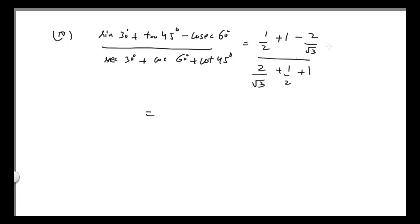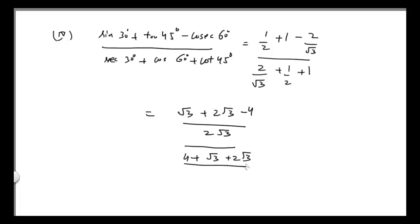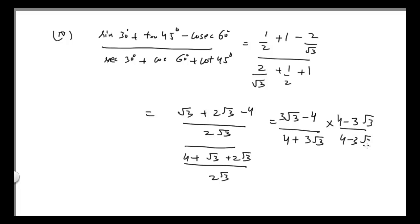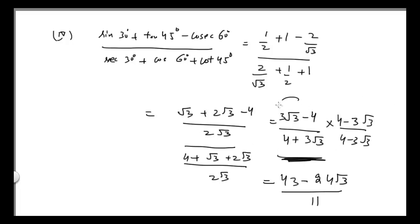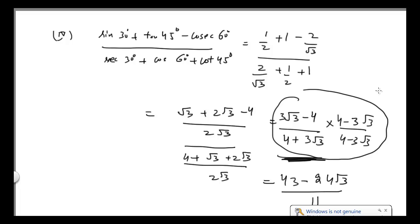After solving, the numerator simplifies to (√3 + 2√3 − 4) / (2√3) and the denominator to (4 + 3√3) / (2√3). This gives (3√3 − 4) / (4 + 3√3). After rationalizing, the final answer is (43 − 24√3) / 11. I've skipped the rationalization step here, which you should solve yourself.